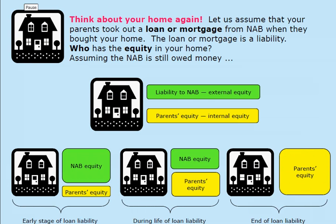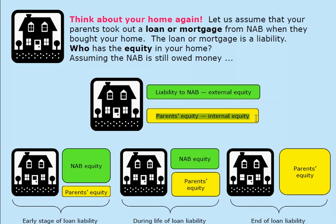Now let's think about your home. Let us assume that your parents took out a loan or a mortgage from the NAB bank when they bought your home. The loan or mortgage is a liability — it has to be repaid sometime in the future. Who has equity in your home? Assuming that the NAB is still owed money, the equity is going to be shared between the NAB, which has a claim or ownership in the asset, and your parents, who also have an equity in the home.